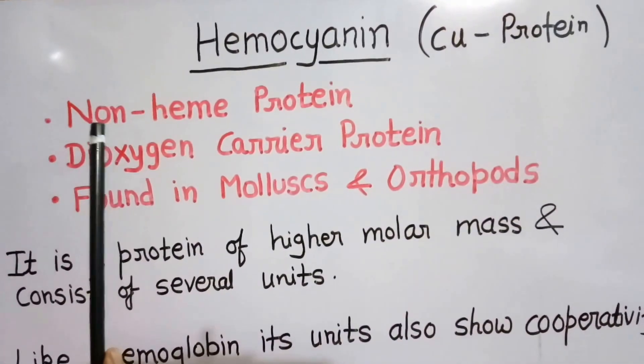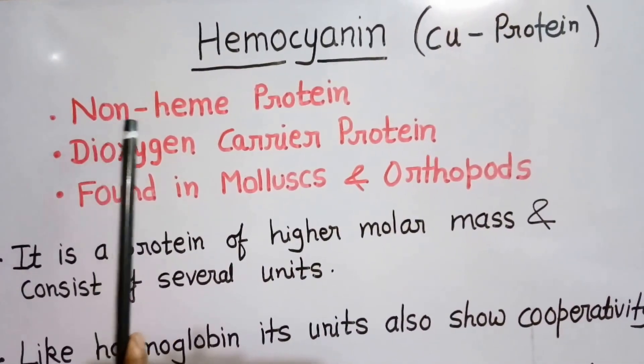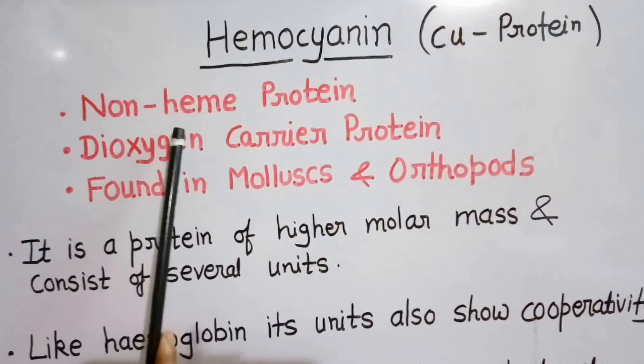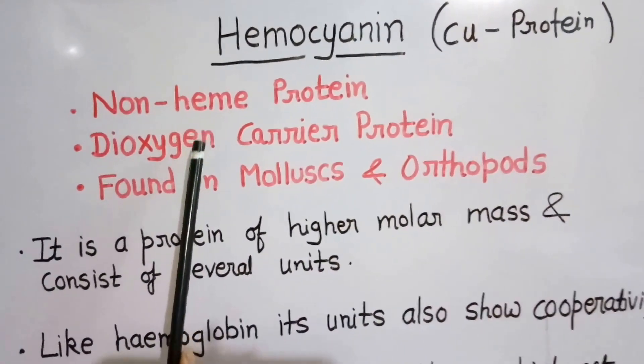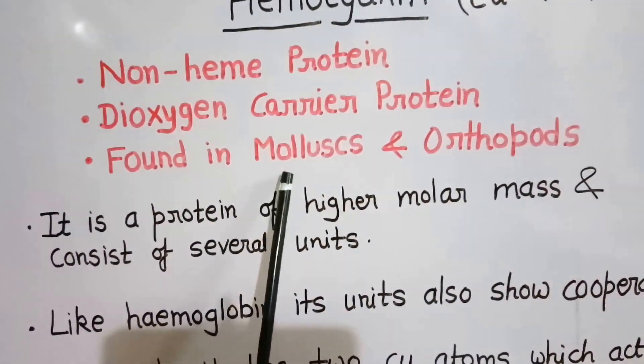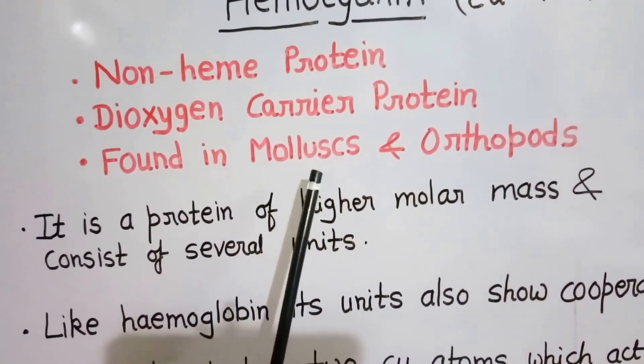The most important points about hemocyanin are that it is a non-heme protein, meaning it does not possess any heme group or porphyrin ring. It is a dioxygen carrier protein found in the blood of mollusks and arthropods.